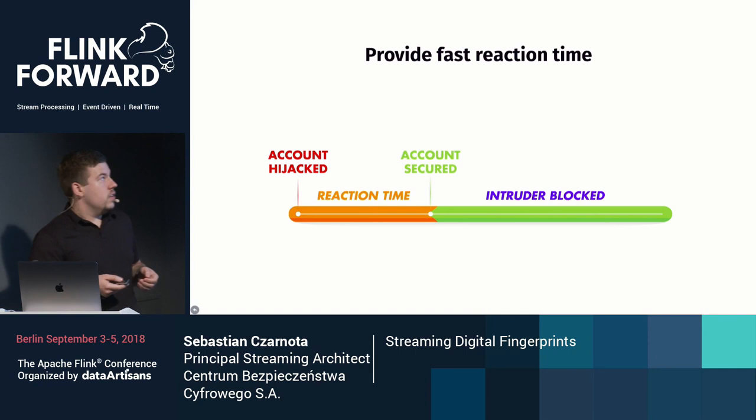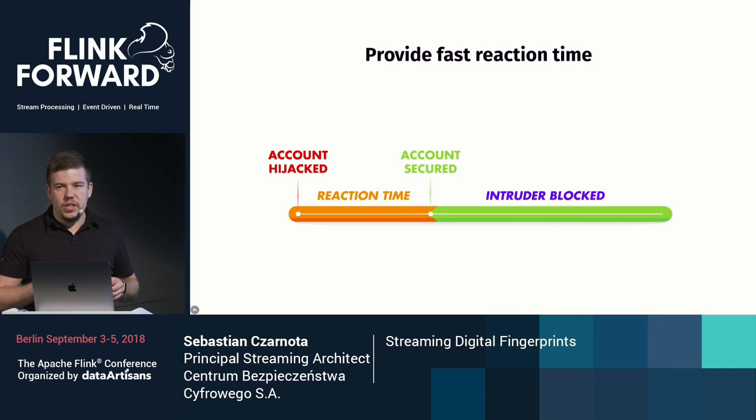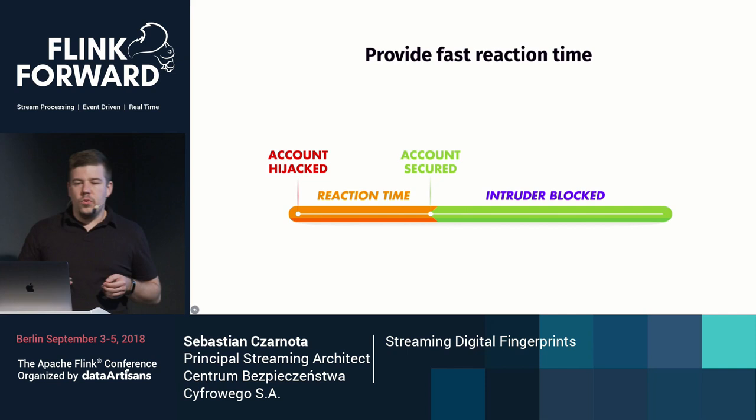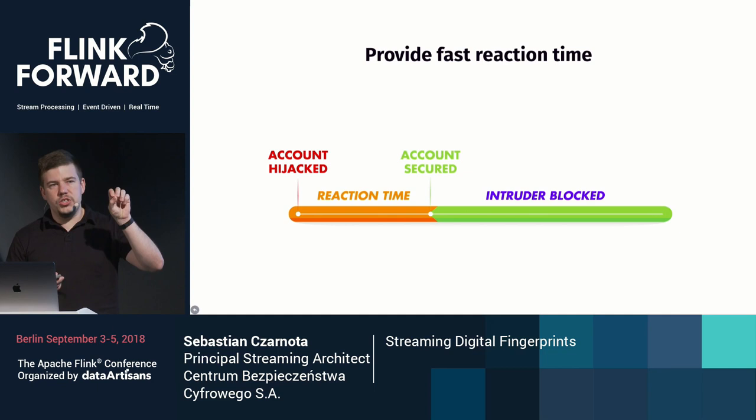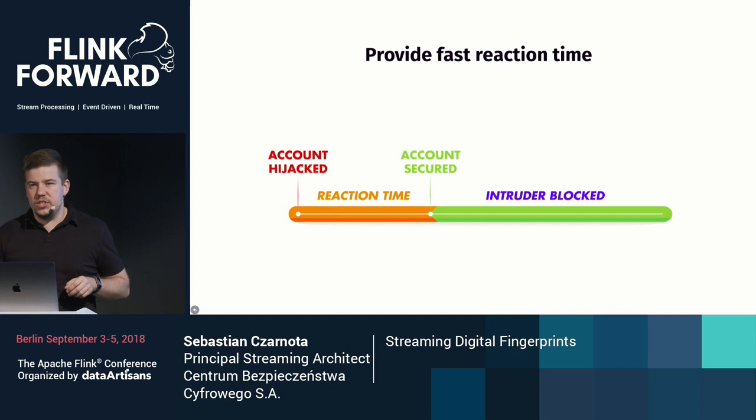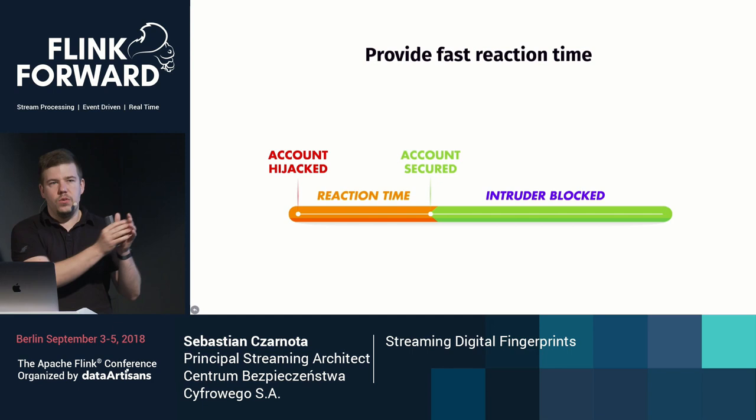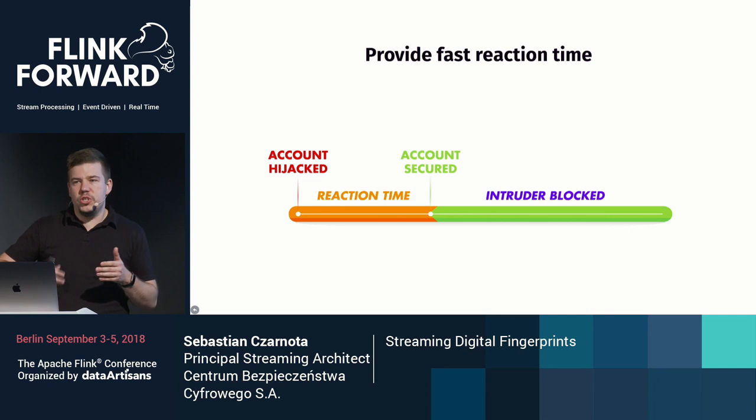Last but not least, and this is probably the most impactful requirement for the Flink application: we have to have a very fast reaction time. By reaction time I mean the time between the moment when someone's session is hijacked to the moment when we can generate an alert for that session. This reaction time consists of Flink latency — how long we process data through Flink — plus the inertia of machine learning models in detecting that behavior changed.